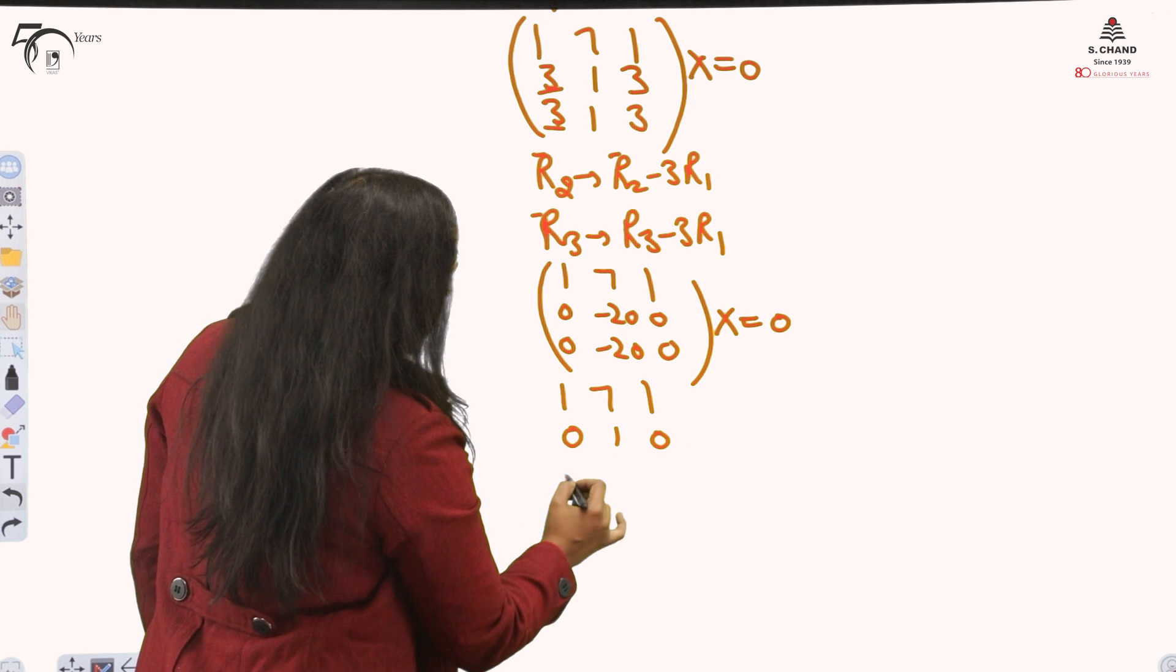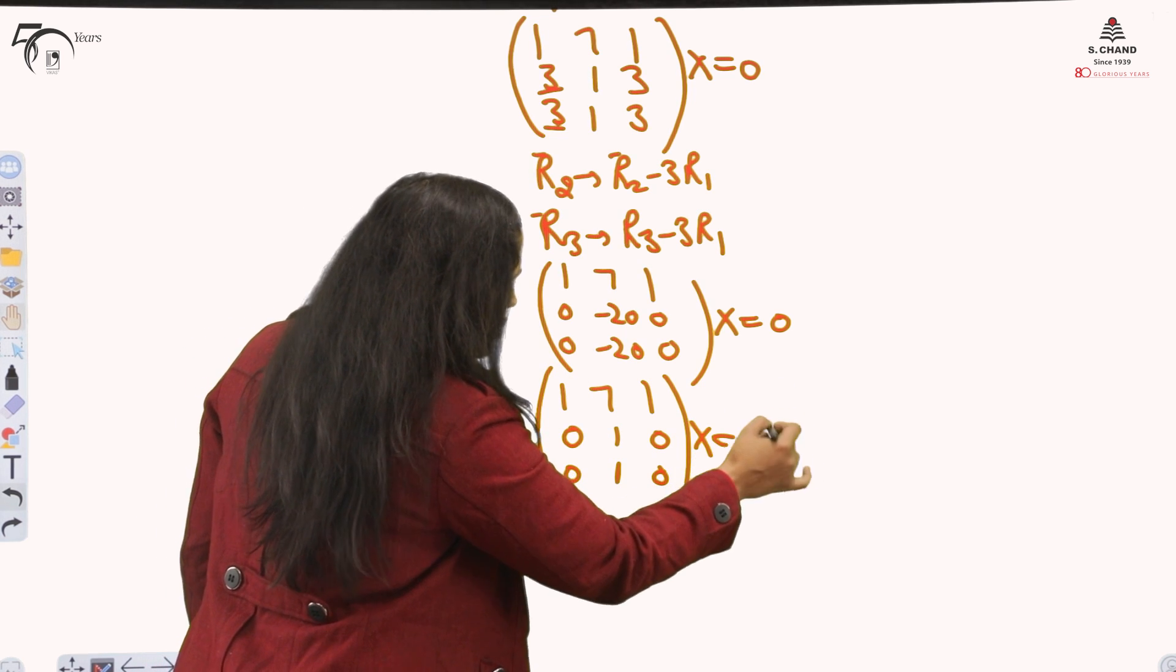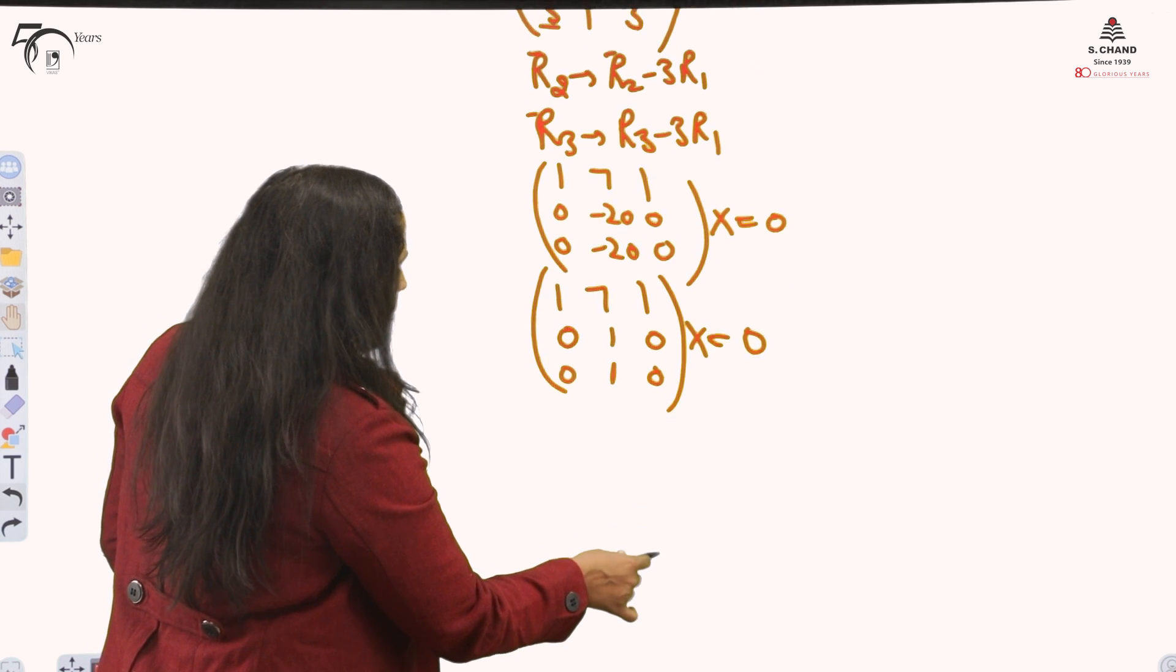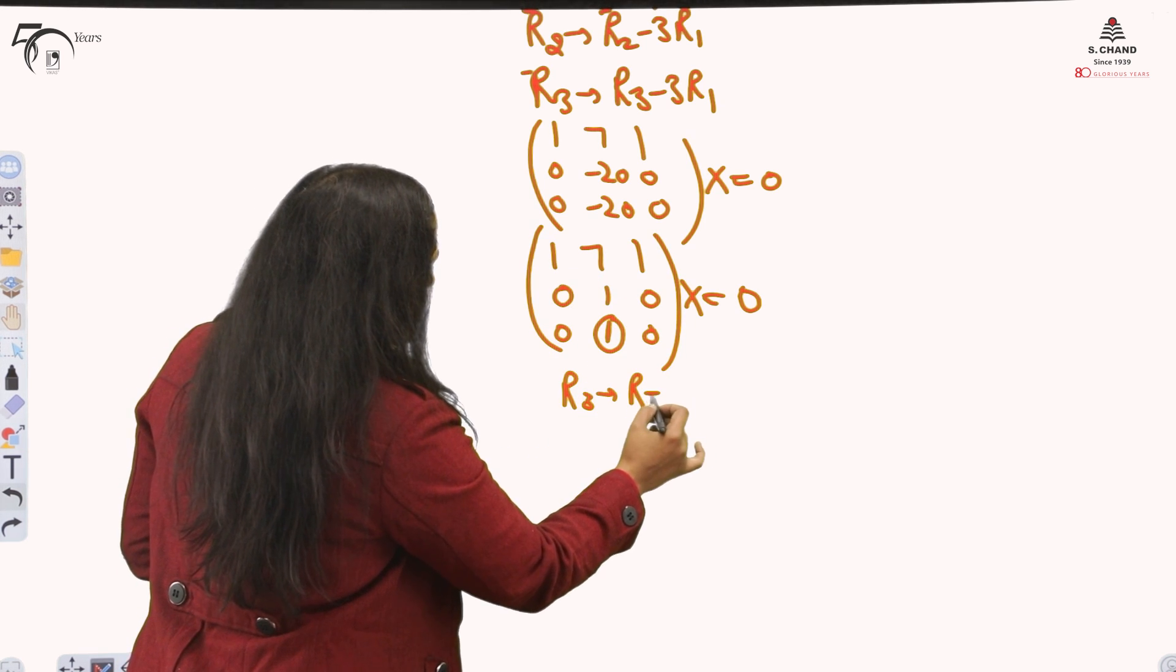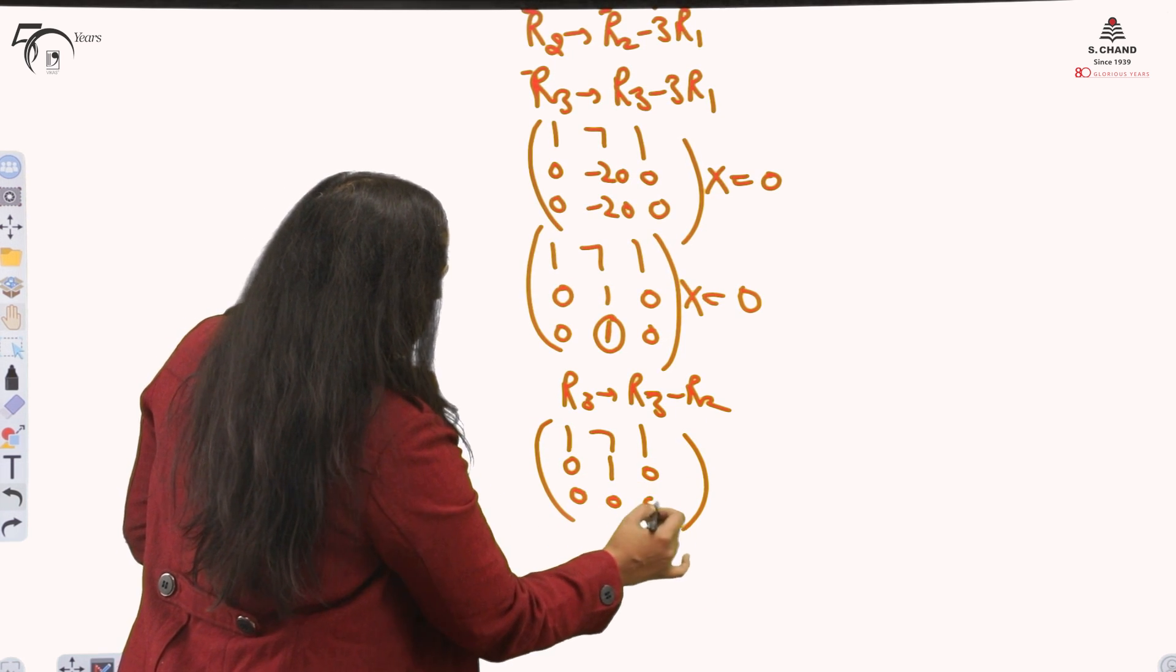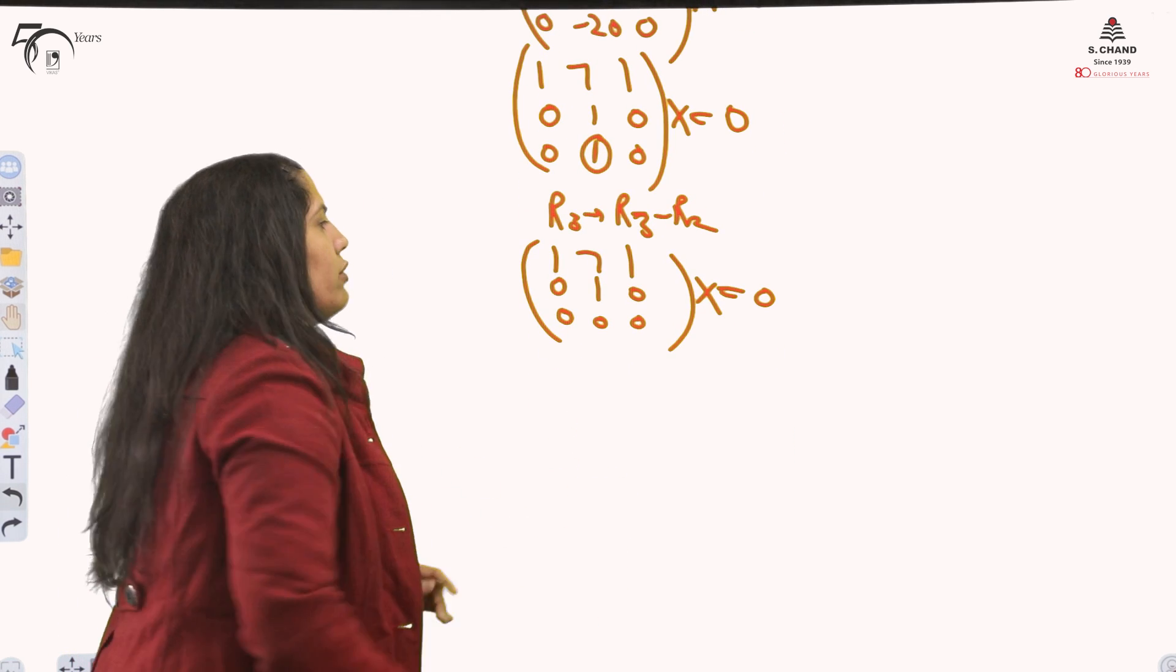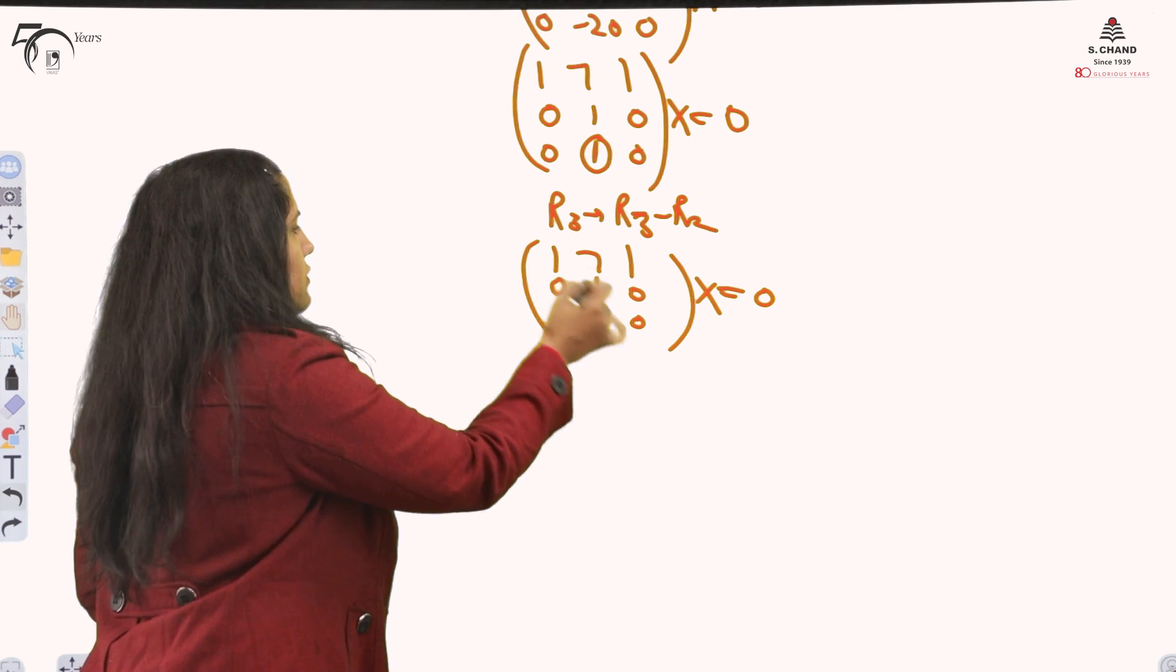You can see these two rows are completely same. So I can take out minus 20. We can easily take out any common factor. For eigenvectors we can take out common because it will simplify more. Now R3 is R3 minus simply R2 and finally I am done with making the matrix in upper triangular form. This is in upper triangular form.